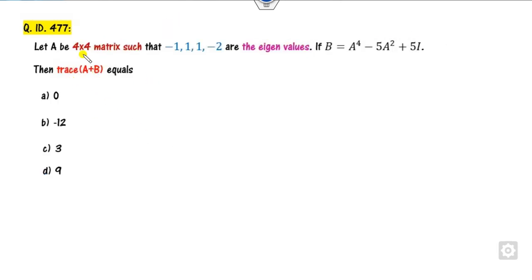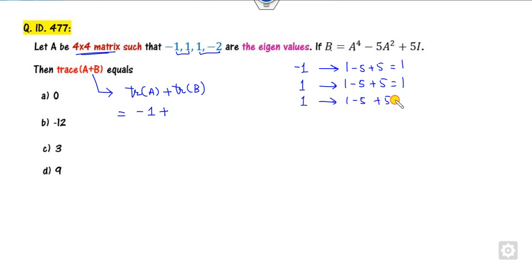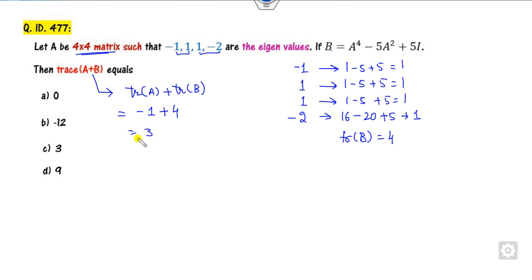Next question: a 4×4 matrix with given eigenvalues. We can write the required value as trace(A) + trace(B). Trace(A) equals the sum of eigenvalues, which is -1. For each eigenvalue of A, find the corresponding eigenvalue of B: for -1 the eigenvalue is 1-5+5 = 1; for +1 it is 1; for -2 the eigenvalue is 16-20+5 = 1. So trace(B) = 4, giving the answer as 3.